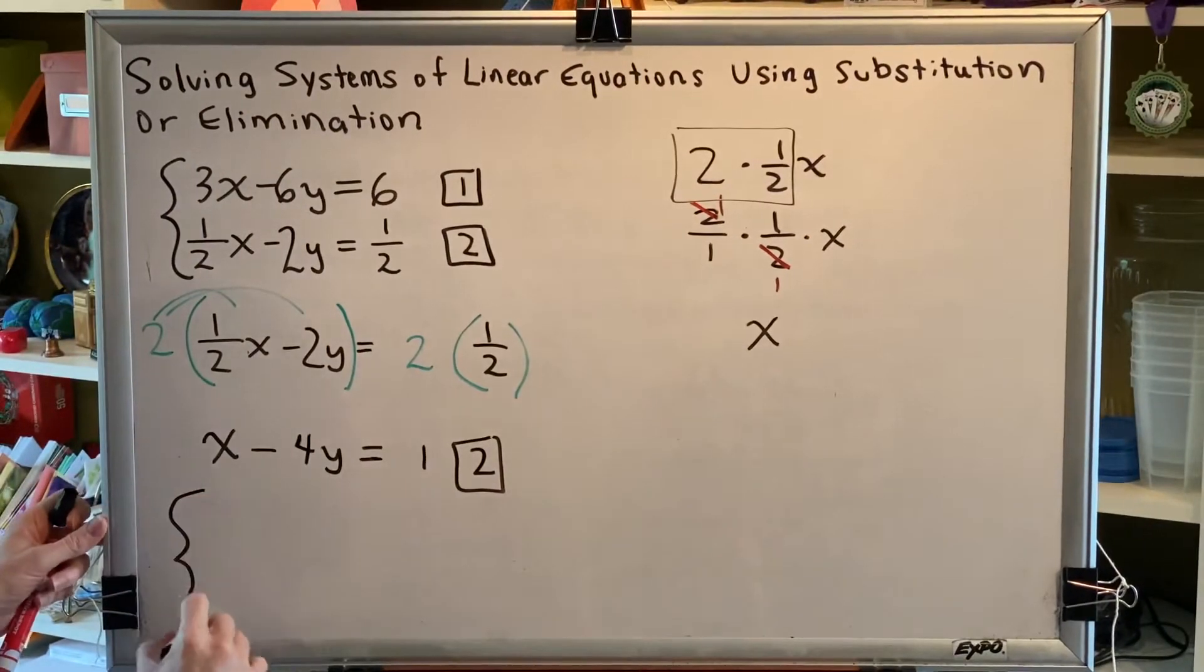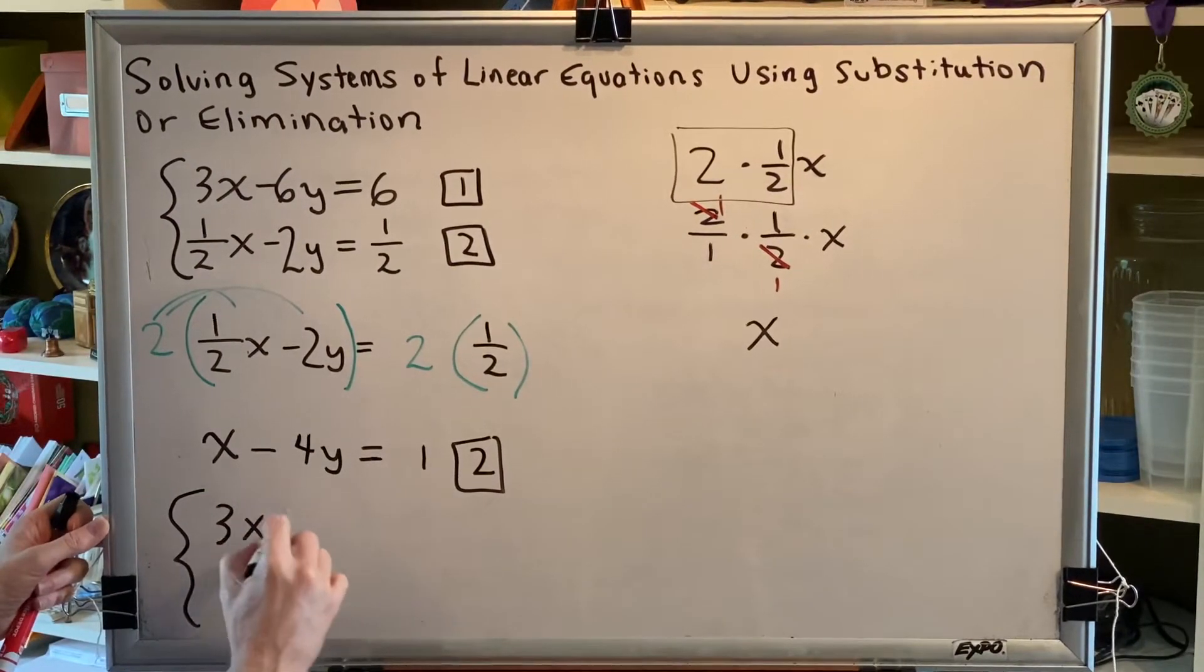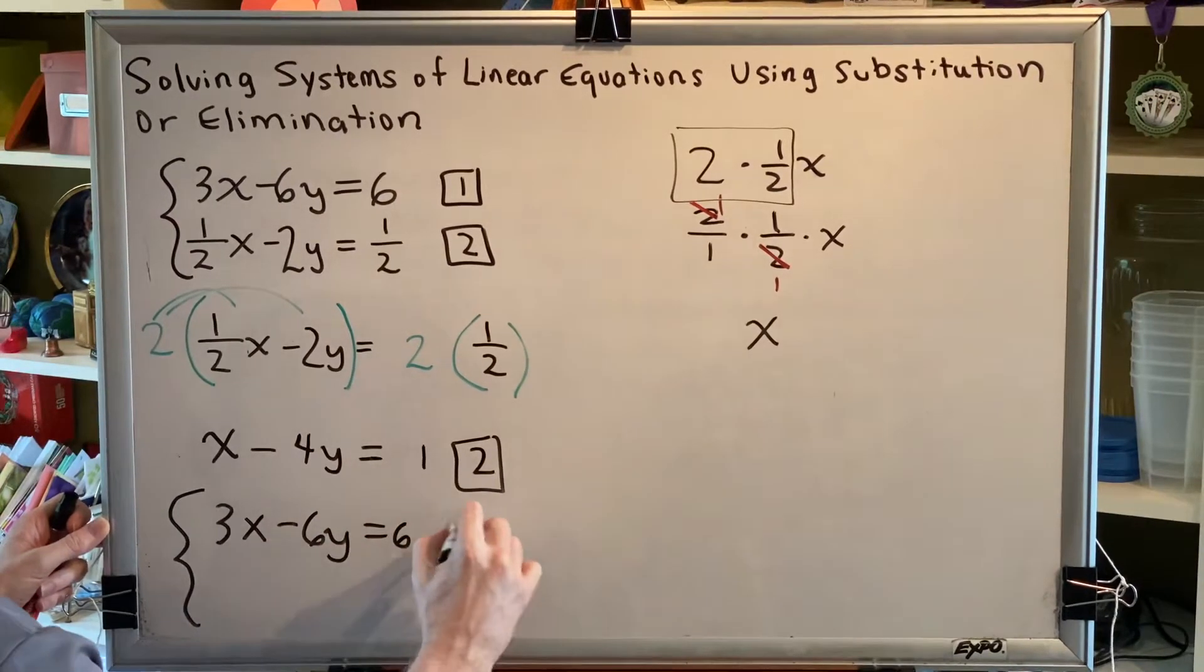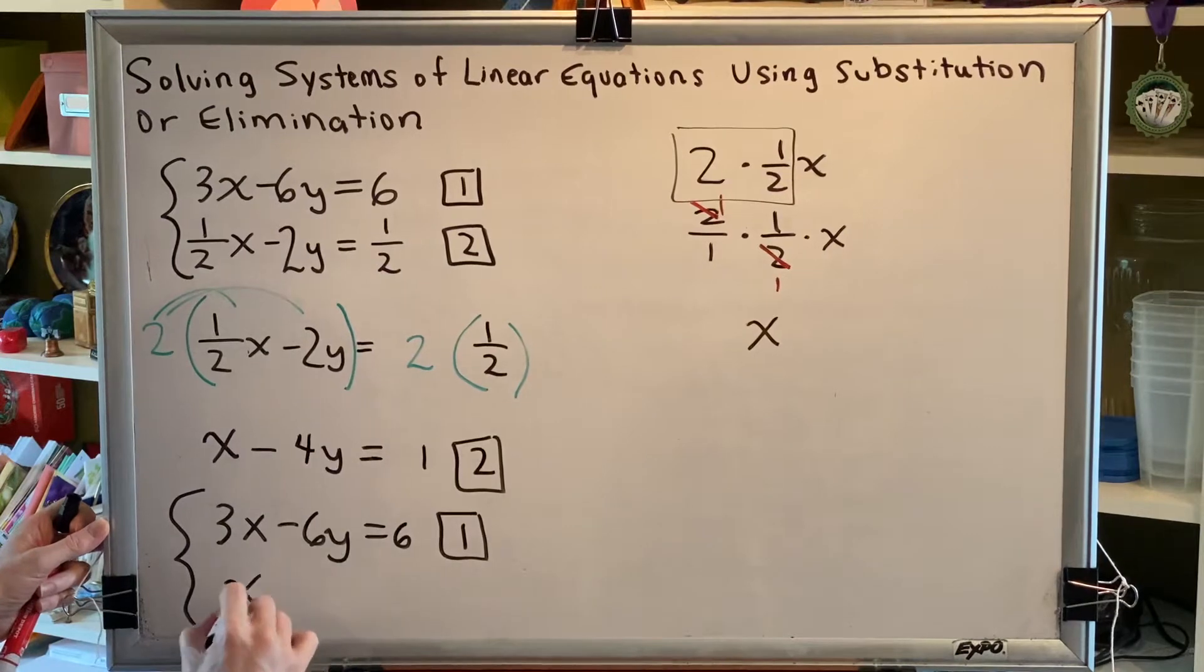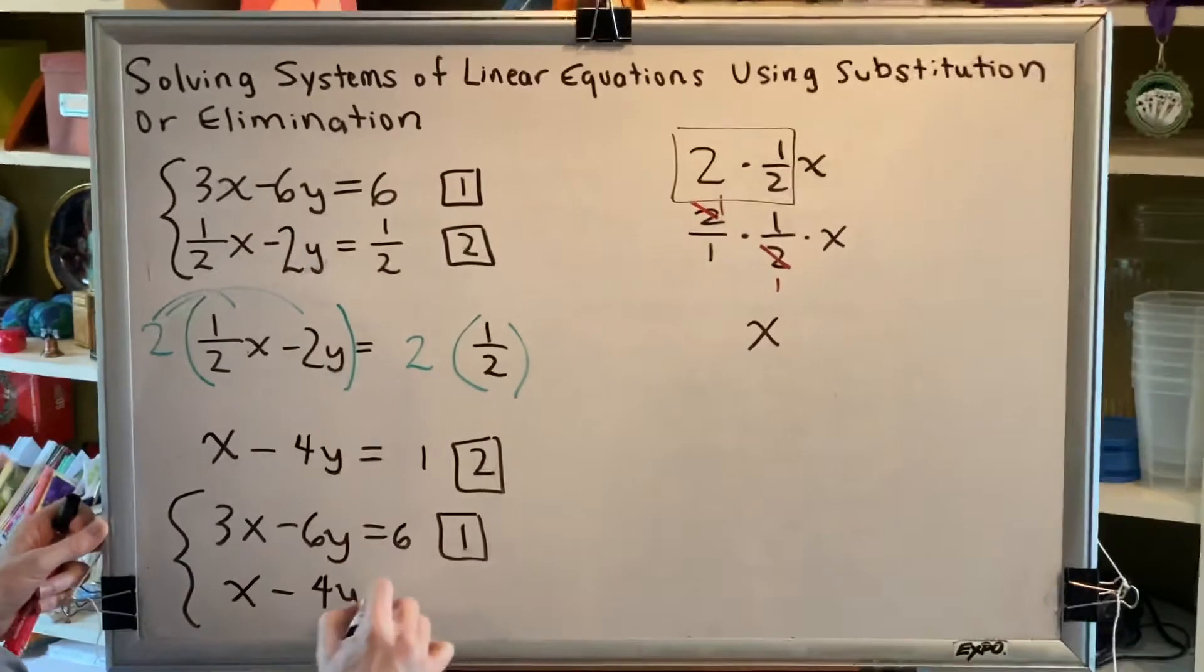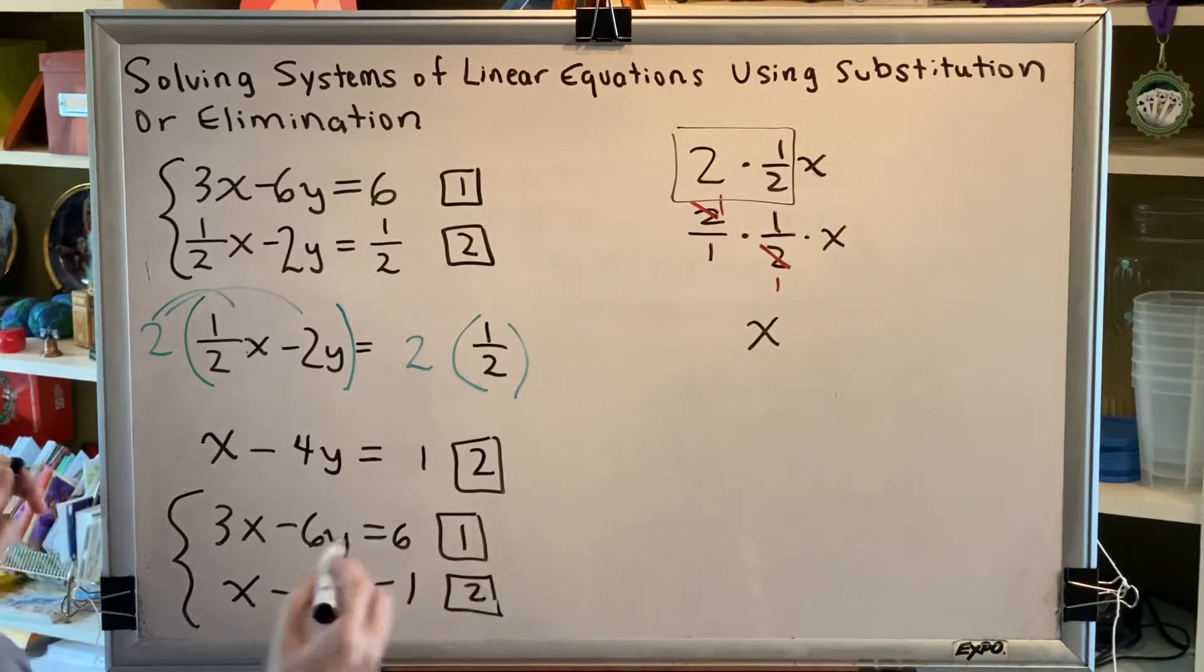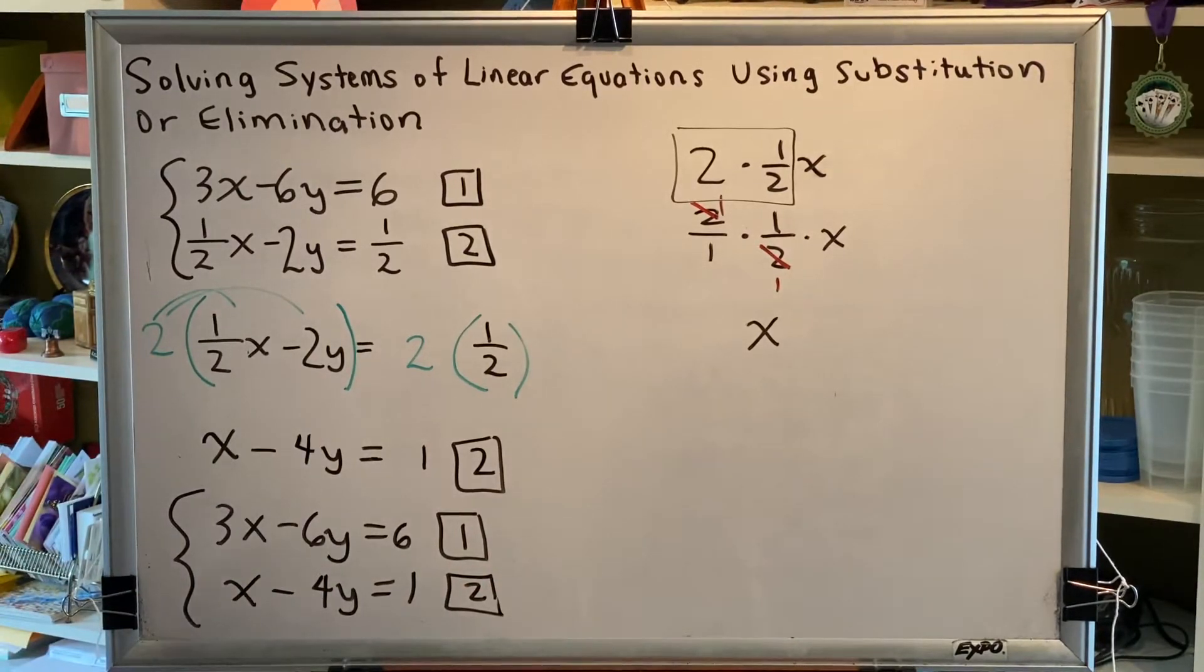So we've now rewritten equation 2 so that it no longer contains any fractions. So our system now looks like this. The top equation is not changed: 3x minus 6y equals 6. The bottom equation now is x subtract 4y equals 1.